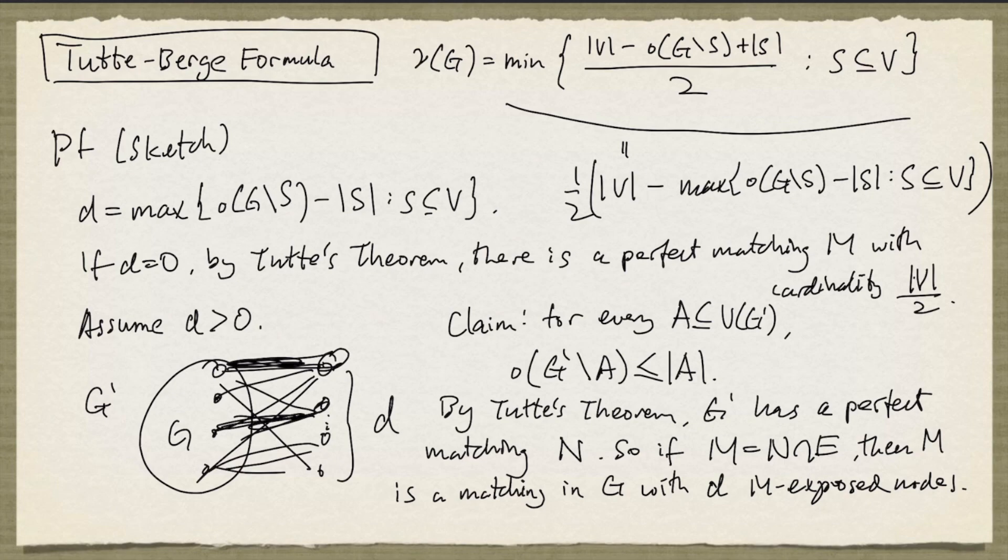And that means the cardinality of M is exactly the number of nodes in the graph G, minus D, all divided by 2. And that's exactly what we needed to show.